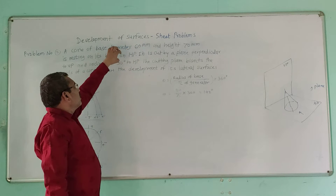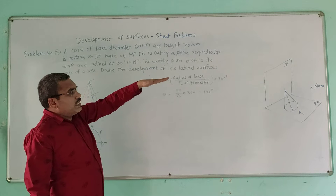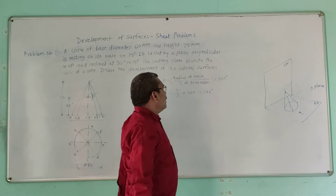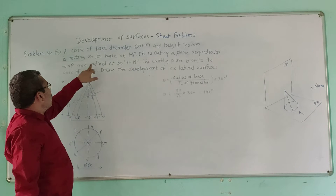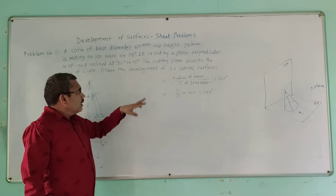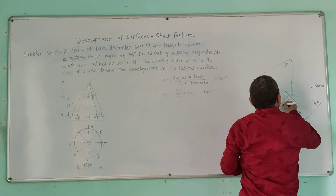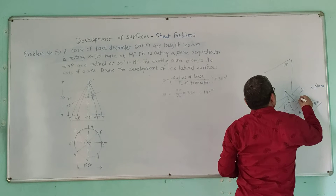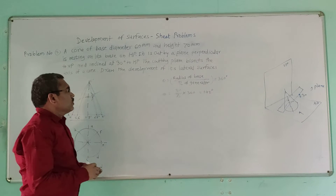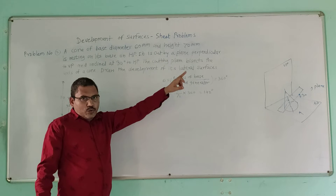This problem is simple. The solid given is a cone with base diameter 60 mm and height 70 mm, resting on its base on HP. It is cut by a plane perpendicular to VP and inclined at 30 degrees to HP. This 30-degree inclined plane can move anywhere around the axis, but the cutting position is given that the cutting plane bisects the axis — meaning at 35 mm, the midpoint of the 70 mm axis.